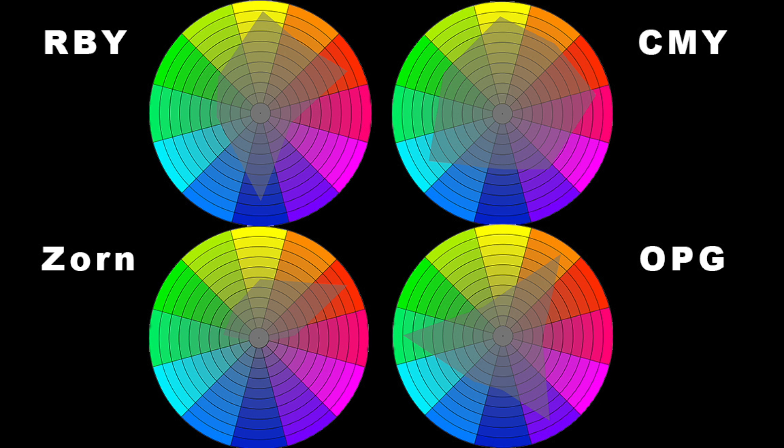So our primary color showdown is complete, and what's the result? Is this like Highlander where there can be only one set of primaries, or is everybody a winner in their own way? Well, I think it's clear from our showdown that there is no one set of primary colors. You can use three different colors to mix an entire color wheel that includes every single hue, even if it doesn't include every single color.